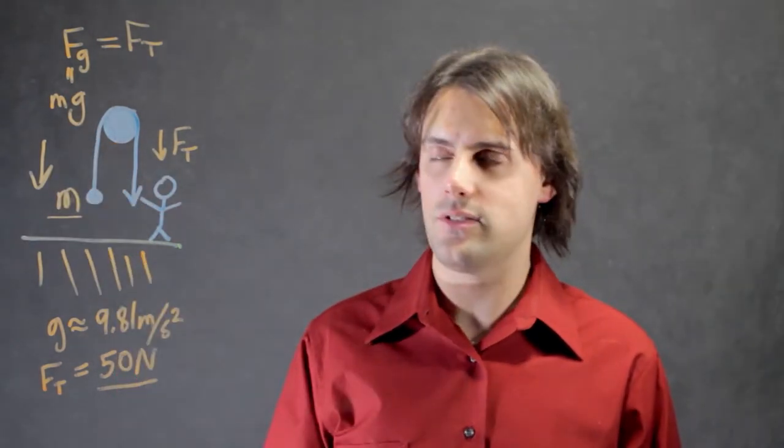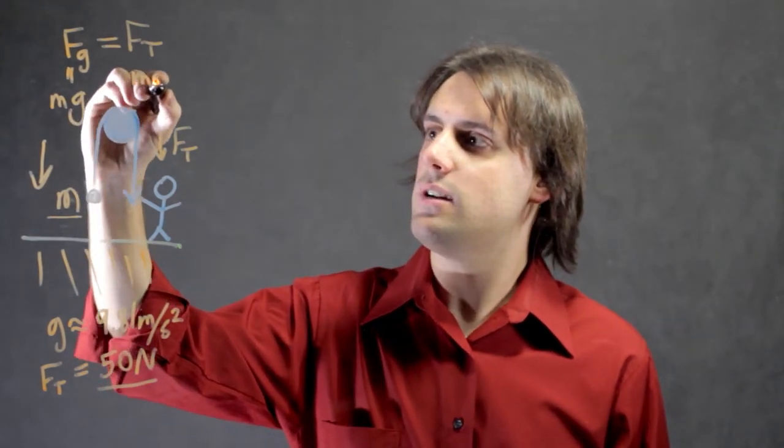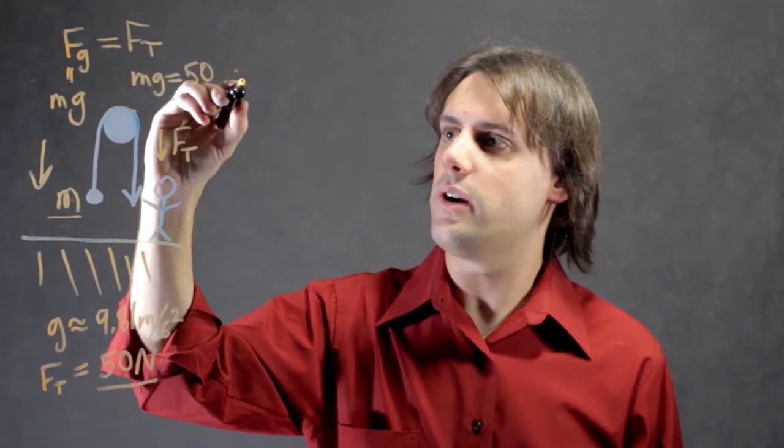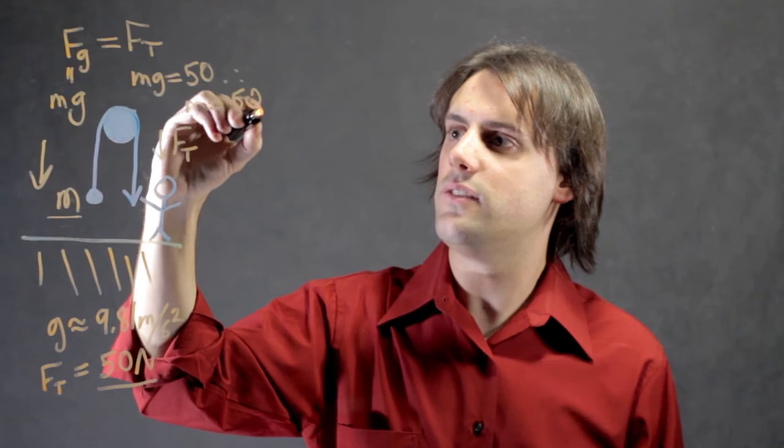So, we have mg is equal to 50, therefore, the mass is equal to 50 divided by G.